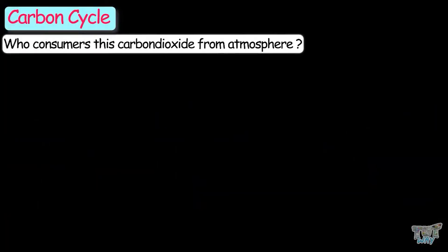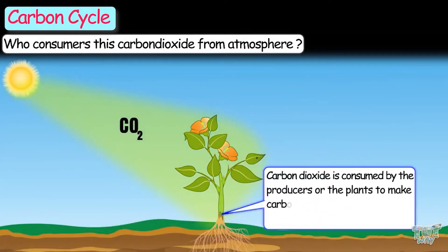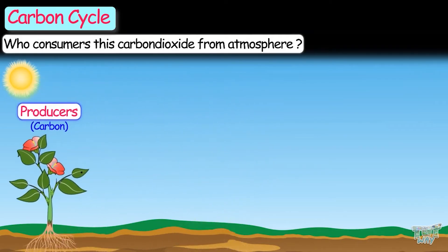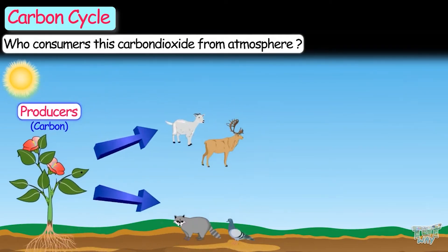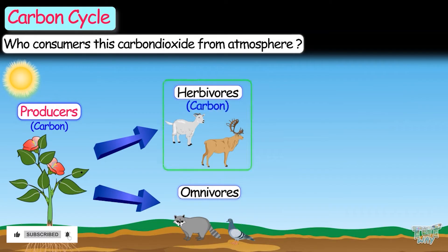Carbon dioxide is consumed by producers, or plants, to make carbohydrates through the process of photosynthesis. Carbon dioxide is used by producers — that is, all the plants — and carbon dioxide becomes part of these producers. Now these producers are consumed by the consumers, that is, all herbivores and omnivores, and then the carbon becomes part of these herbivores and omnivores.